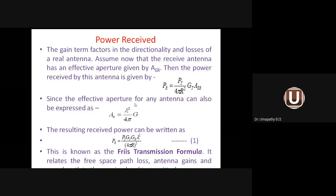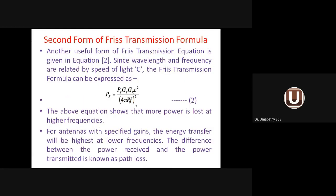The first form involved λ, transmitted power, received power, distance, and gain of both antennas. The second form involves velocity of light and frequency. The second form indicates that more power is lost at higher frequency — if you go to high frequency, a lot of power is lost.